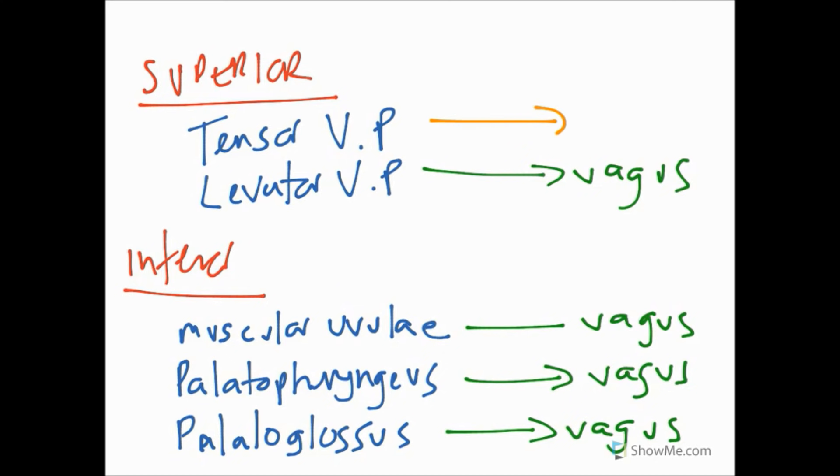The odd man out in here is the tensor, which is supplied by the mandibular nerve, a branch from the medial pterygoid, so it's going to be trigeminal.